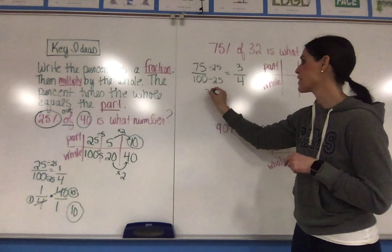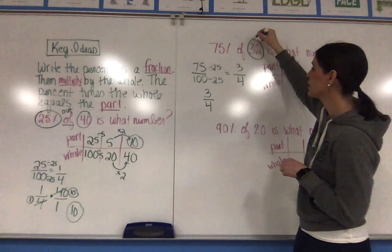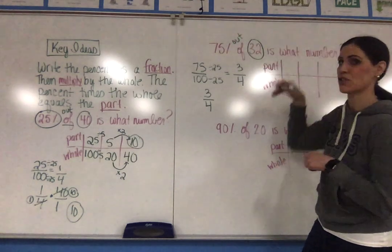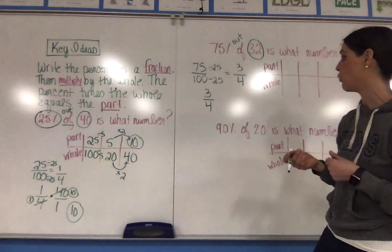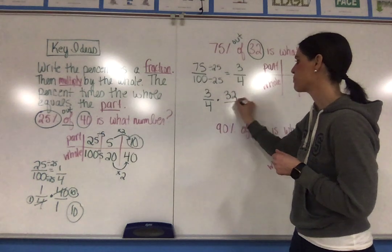Then I'm going to take 3 fourths and I'm going to multiply it by the whole, which is 32. Again, you can think of this like out of 32. When I say out of something, that out of number is your whole. So I'm going to multiply this by 32 and I can put that over 1.